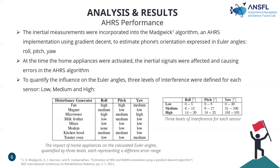For the AHRS performance: the inertial measurements were incorporated into the AHRS algorithm to estimate the orientation expressed in Euler angles — roll, pitch, and yaw. As you can see in the table below, when the home appliances were activated, the inertial signals were affected, causing errors in the AHRS algorithm and producing interference in the roll, pitch, and yaw estimates. To quantify this influence on the orientation angles, I consider three levels of interference for each sensor: low, medium, and high, as shown in the table below.